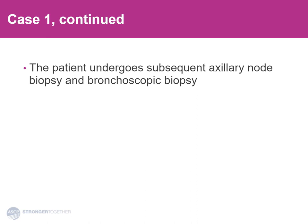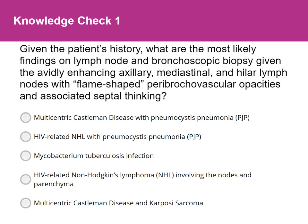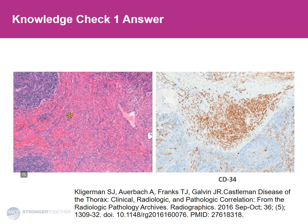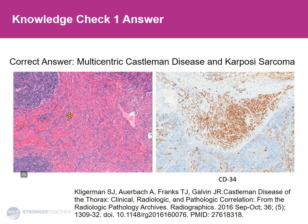The patient underwent a lymph node biopsy and a bronchoscopic biopsy. There are really two answers here that you should consider. If you are a thoracic specialist radiologist and you do a lot of these cases, the best answer is a little better than the other answer that is possible. Not surprisingly, given that this is a lecture on Castleman disease, the answer is multicentric Castleman disease and Kaposi's sarcoma.